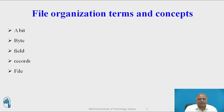A group of related fields — such as a student's name, the course taken, the date, and the grade — comprises a record. A group of records of the same type is called a file. A record describes an entity. An entity is a person, place, or thing on which we store and maintain information. Each characteristic or quality describing a particular entity is called an attribute — for example, student ID, course, date, and grade are attributes of the entity course.